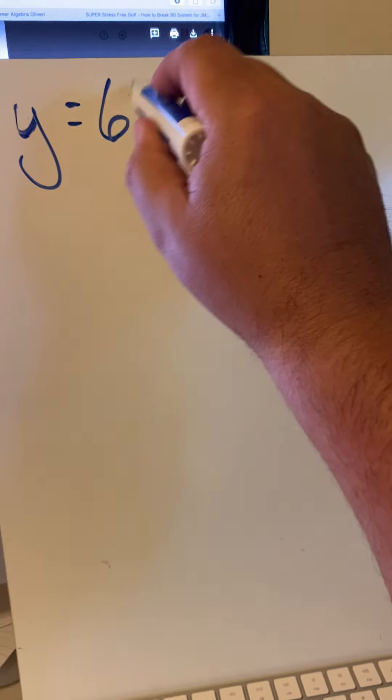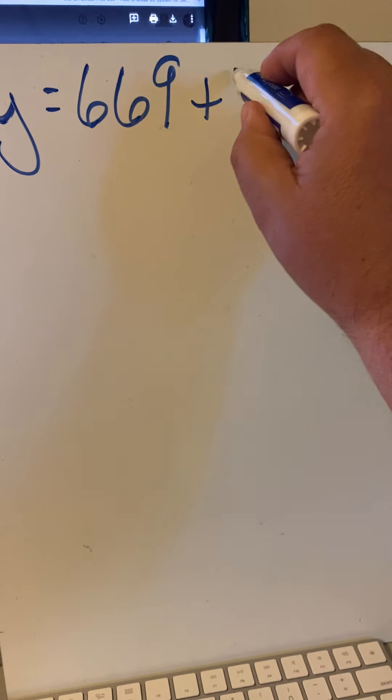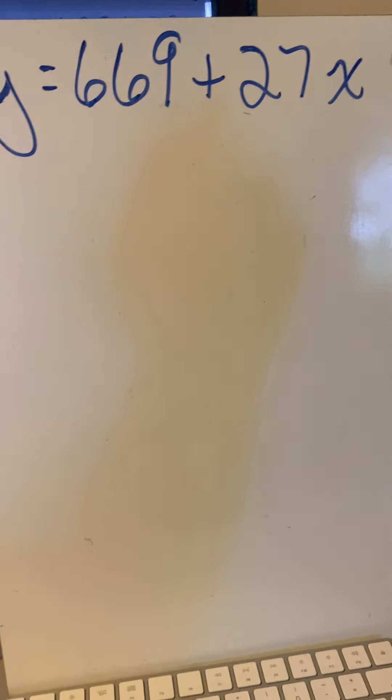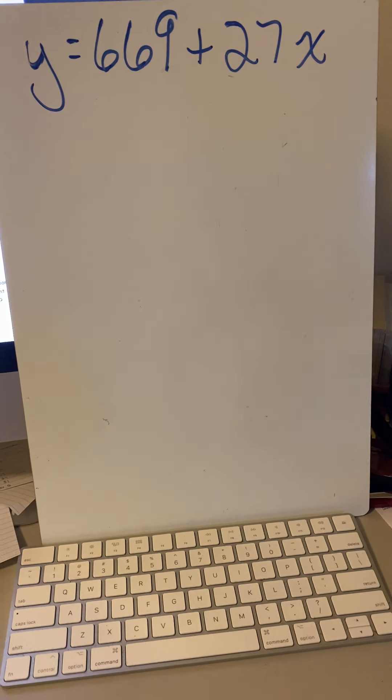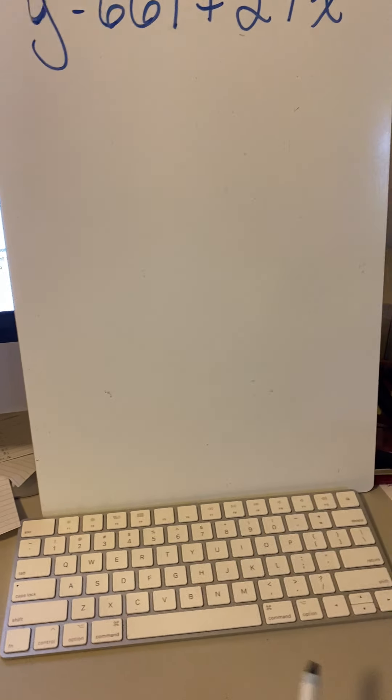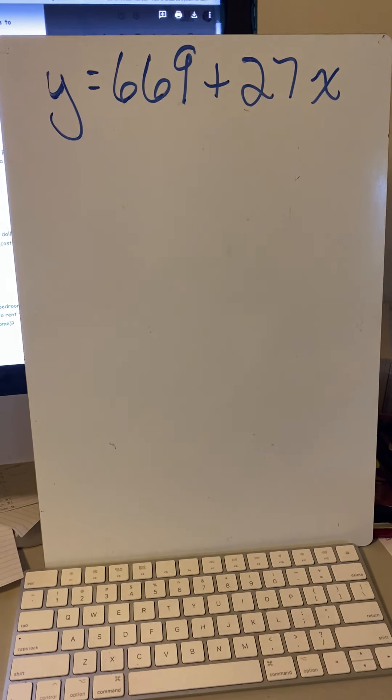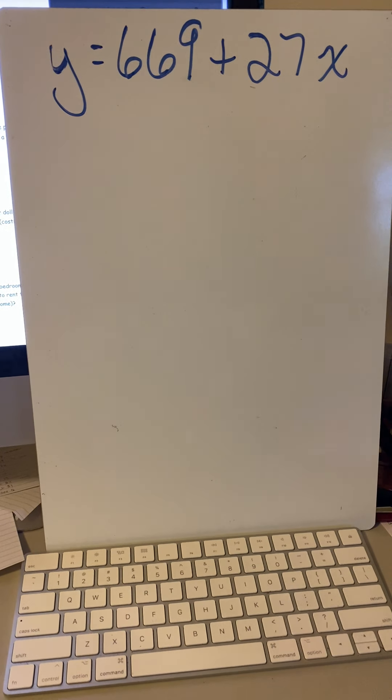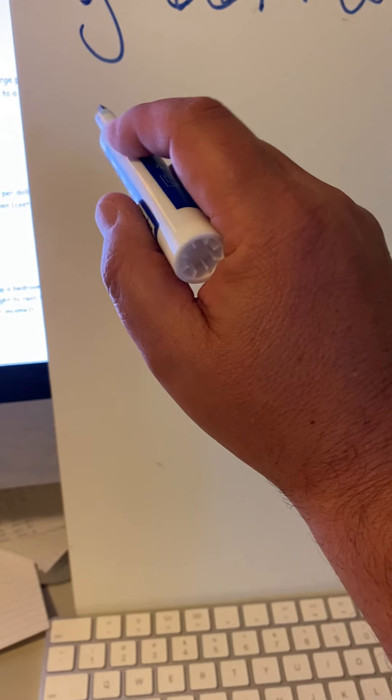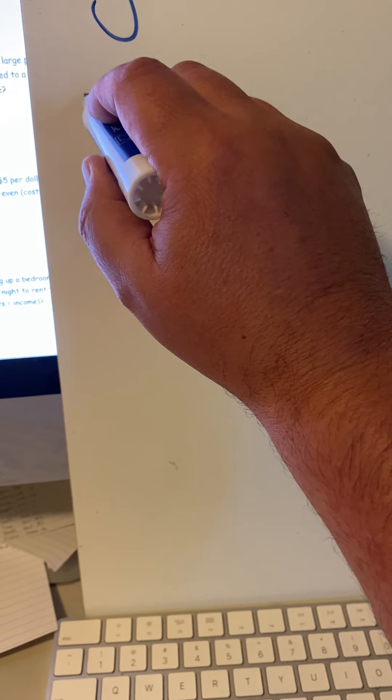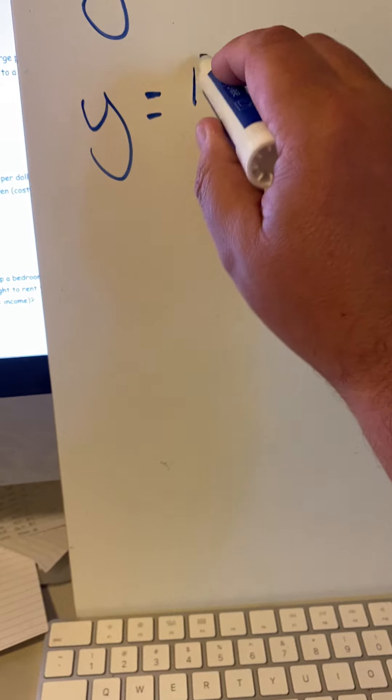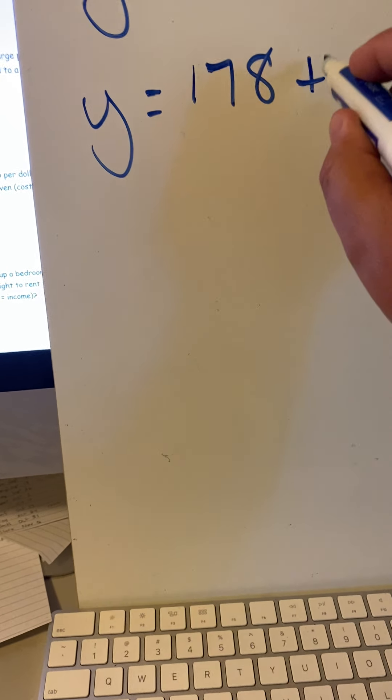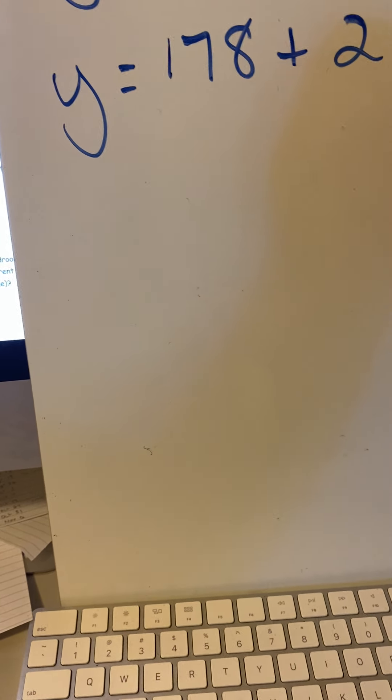At Prairie Street it is $669 plus $27 per person. That looks interesting - Y equals MX plus B, only I wrote it backwards and put the coefficient and X over there. The cost of Lino's is $178 plus $28 per person.